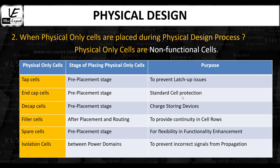With respect to gate protection, end cap cells protect the gates of the standard cells located near the boundary from damage that occurs during chip manufacturing. With respect to DRC compliance, end cap cells also help avoid base layer design rule check violations, such as N-well and implant layer rules at the boundary.